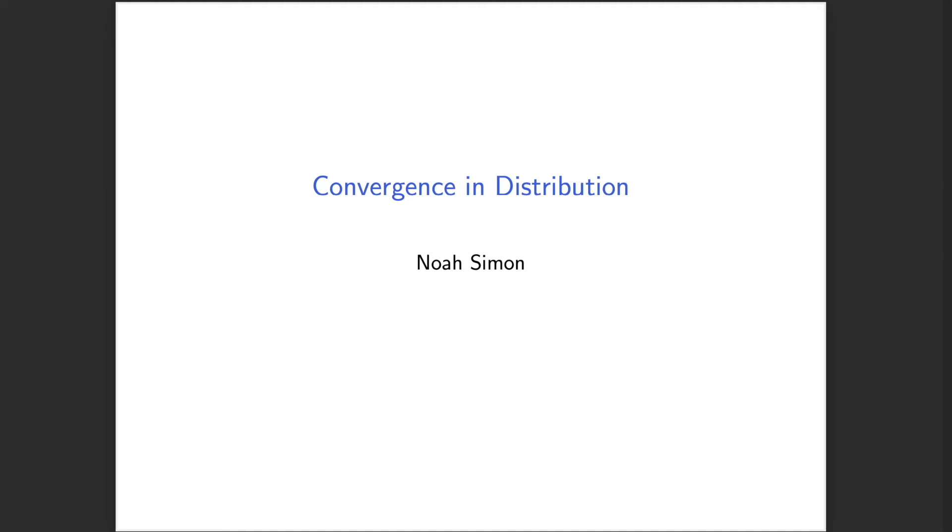We're going to talk now about a second type of convergence of sequences of random variables. This is known as convergence in distribution, as compared to convergence in probability which we talked about before. This will be very important when we're engaging with future results like the central limit theorem.